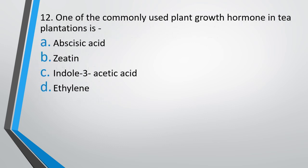Question 12: One of the commonly used plant growth hormones in tea plantations is — abscisic acid, zeatin, indole-3-acetic acid, or ethylene. The correct answer is Option C, indole-3-acetic acid.